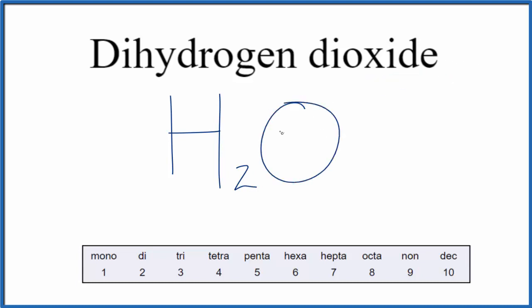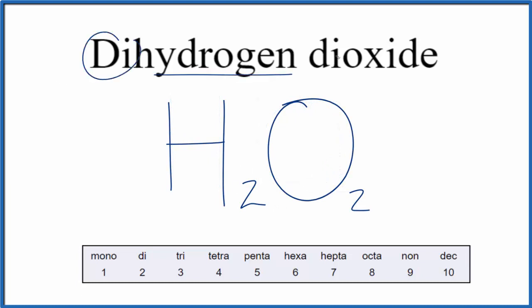That's from oxygen, so we write O, and again we have that di there, so di, that means two, and we end up with H2O2 as the formula for dihydrogen dioxide.